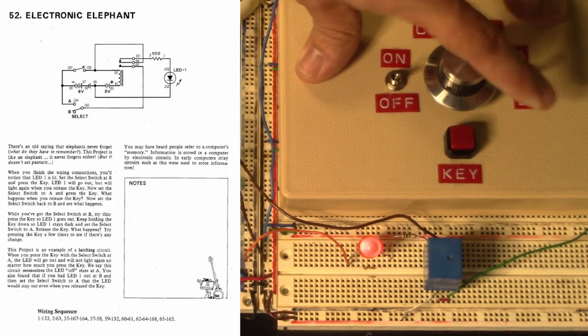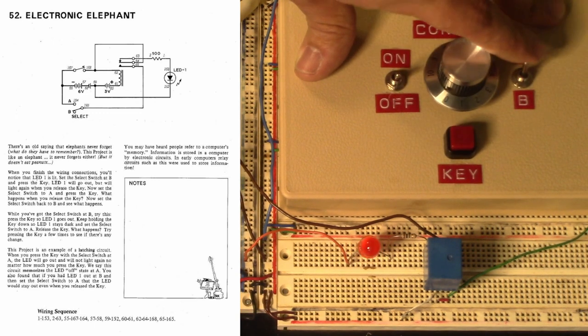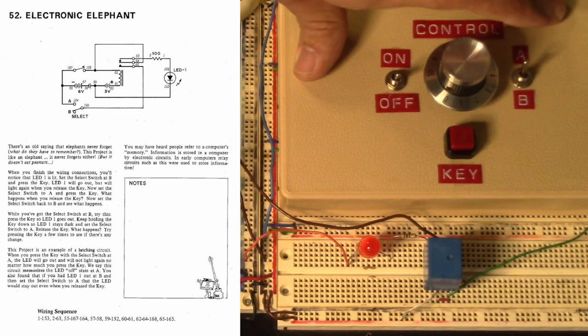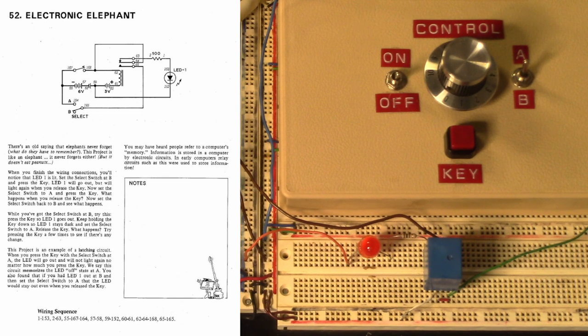You may have heard people refer to a computer's memory. Information is stored in a computer by electronic circuits. In early computers, relay circuits such as this were used to store information.